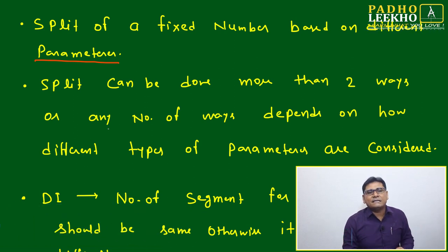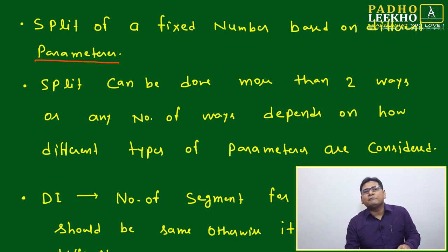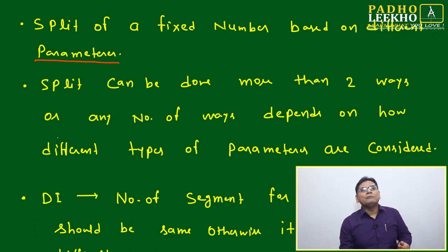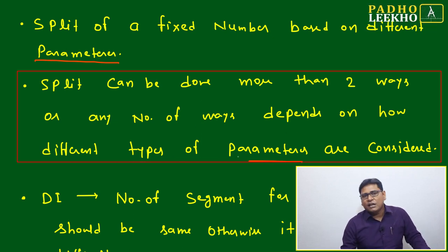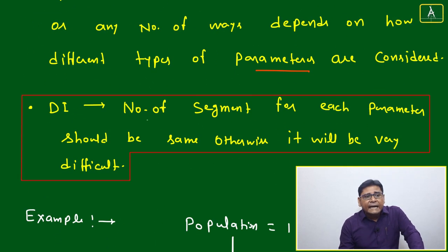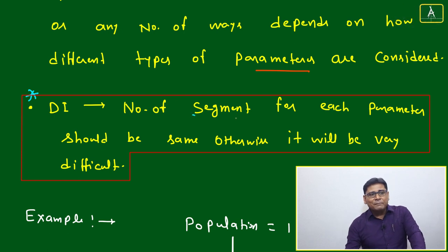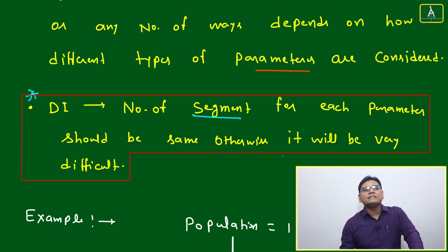One thing we must take care of to make it a perfect fit for a DI type case let: the number of variables in both ways should be the same — we will try to keep them the same. A split can be done in more than two ways or any number of ways depending on how many different parameters are considered. The number of segments for each parameter should be the same; otherwise it will be very difficult.